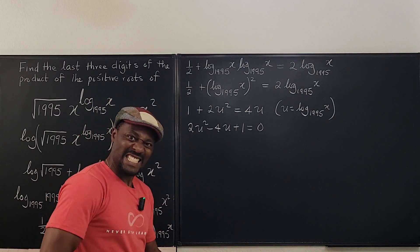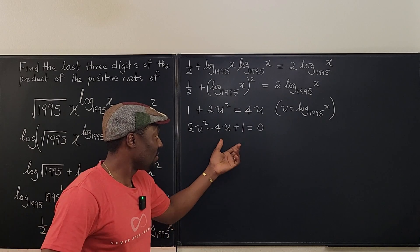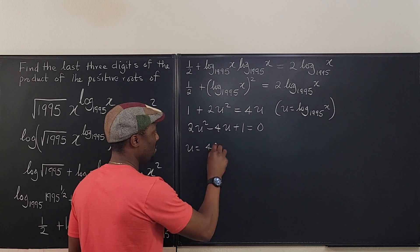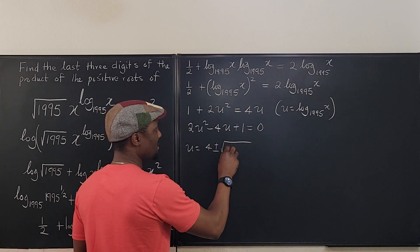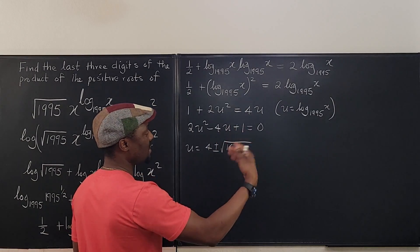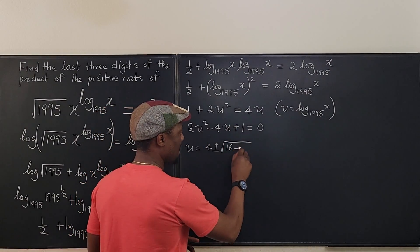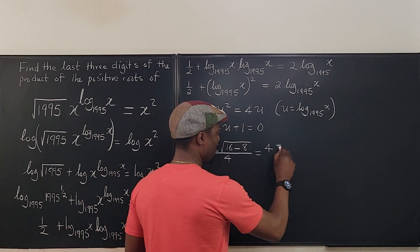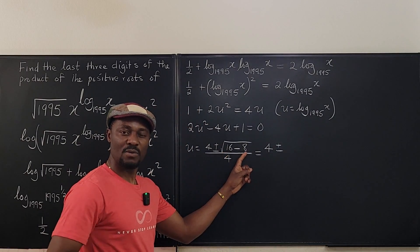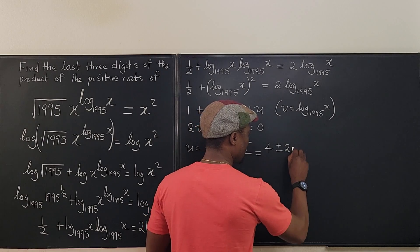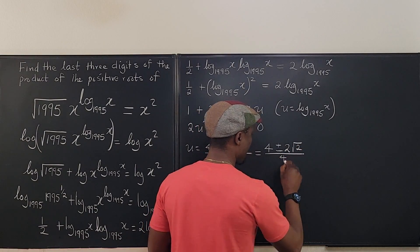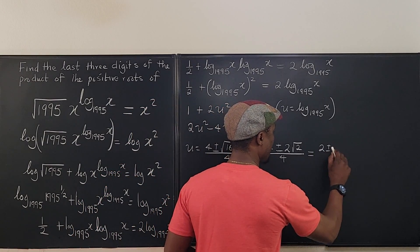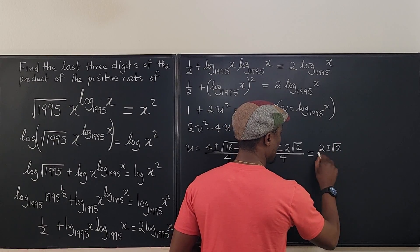This cannot be factored, so we use the quadratic formula. u equals negative b, which is 4, plus or minus the square root of b squared — that's 16 — minus 4ac. With a=2, c=1, 4ac equals 8. So we get: (4 ± √(16−8)) / (2·2) = (4 ± √8) / 4 = (4 ± 2√2) / 4, which simplifies to (2 ± √2) / 2.